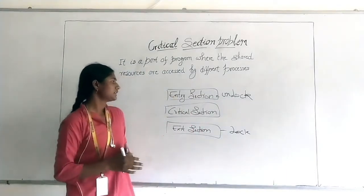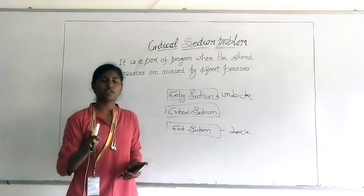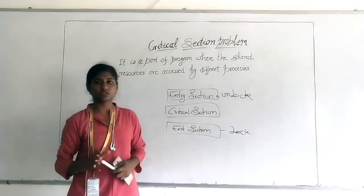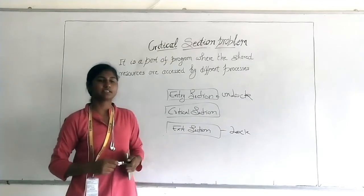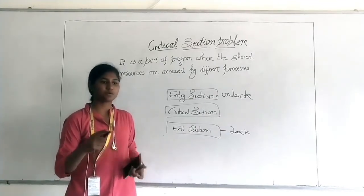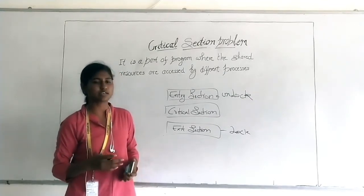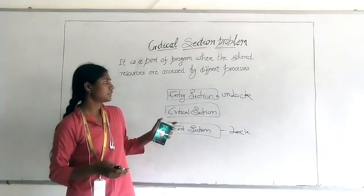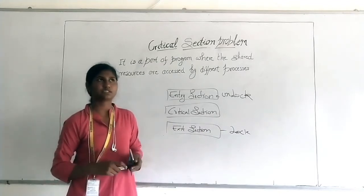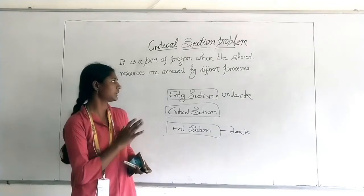To solve the critical section problem so that only one process can use the resources at a time, there are many solutions. You can create your own solution. Known solutions include Peterson's solution, semaphore, and monitor. These are the standard solutions for the critical section problem.